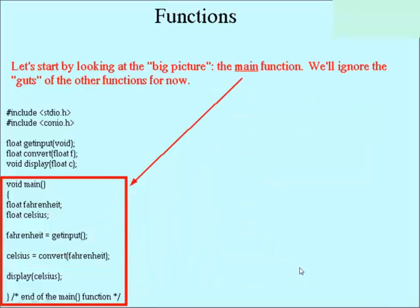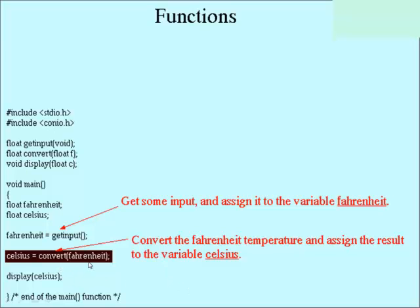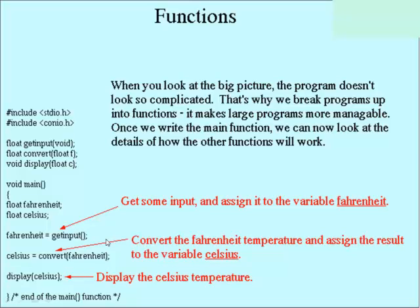Let's look at the big picture of the main function. We'll ignore the guts of the other functions for now. You already know about variable declarations inside of main. Here we have a function that says get the input and assign it to a variable called Fahrenheit. Here's a function that says convert the Fahrenheit value into Celsius. So take Fahrenheit, convert it, and assign the result to Celsius. And here's something that says display the result in Celsius. Notice that with some good names here, I don't even have to put any comments. It's self-documenting code. This is why we break up programs into functions. It makes big programs manageable.